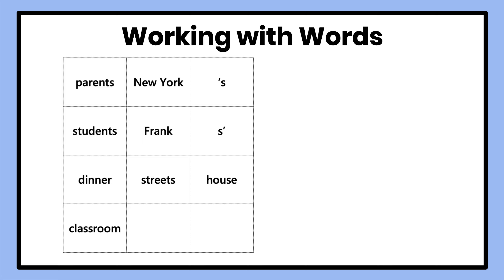We have base words, one apostrophe S, and one S apostrophe displayed here. Look closely at the words and think about what kind of words they are. The words that we have are nouns — some are plural nouns, and some are singular nouns. These words are all nouns: parents, students, dinner, classroom, streets, house, Frank, and New York.